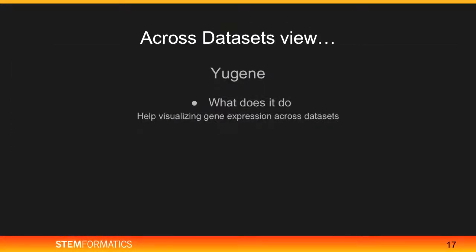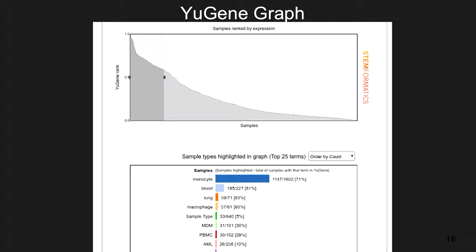At Stimformatics we also have a cross-dataset view. For this we use our U-gene graph. It helps in visualizing gene expression across datasets. You just choose your favorite gene and automatically all the datasets in Stimformatics that you have access to get selected. Every time a dataset is processed, along with the output, a U-gene file is produced. The U-gene rank on the y-axis comes from that U-gene file, which uses an algorithm to calculate the rank. On the x-axis you have samples.